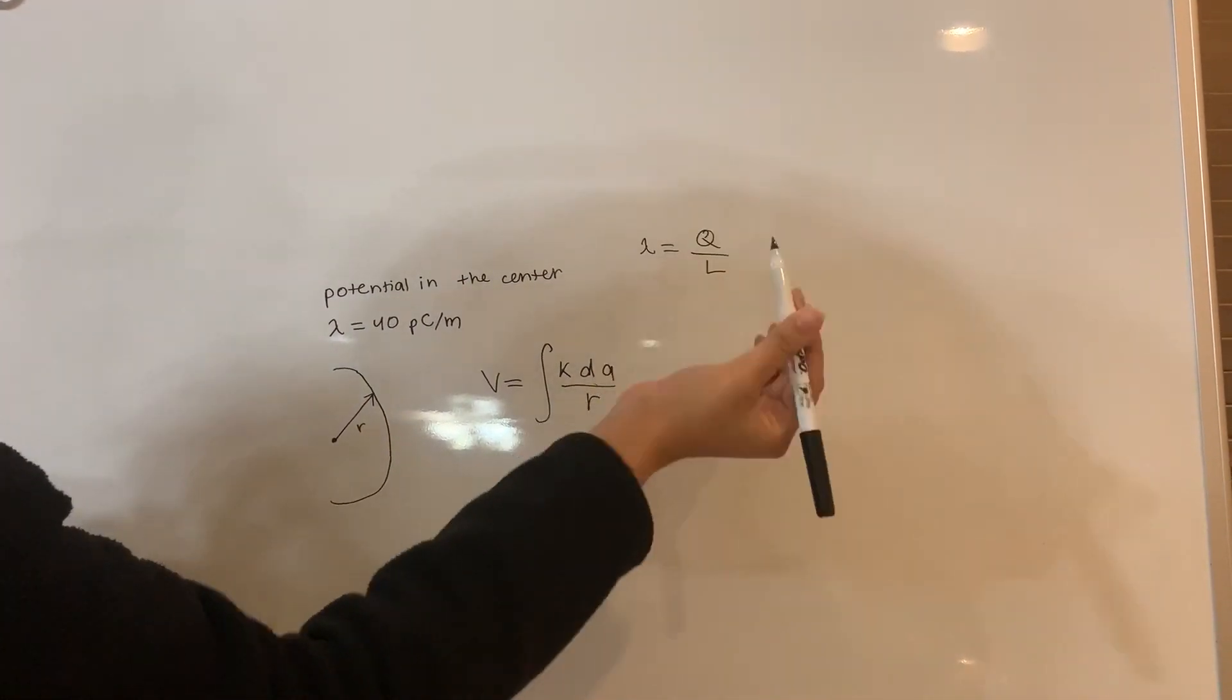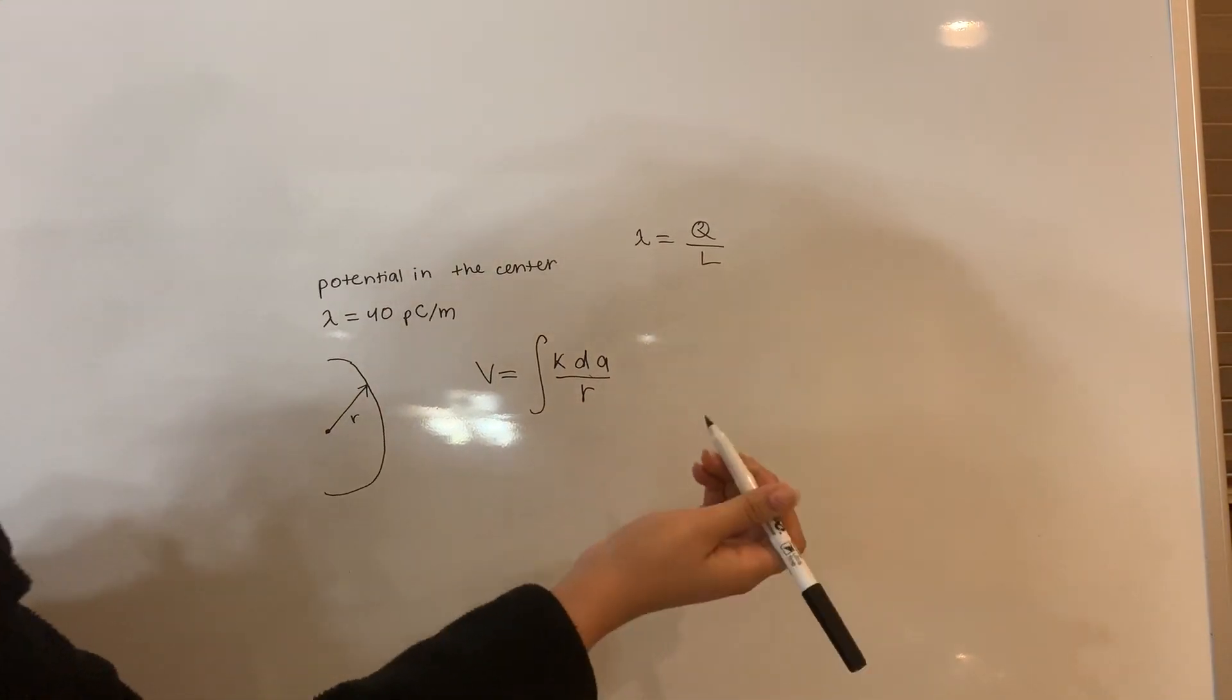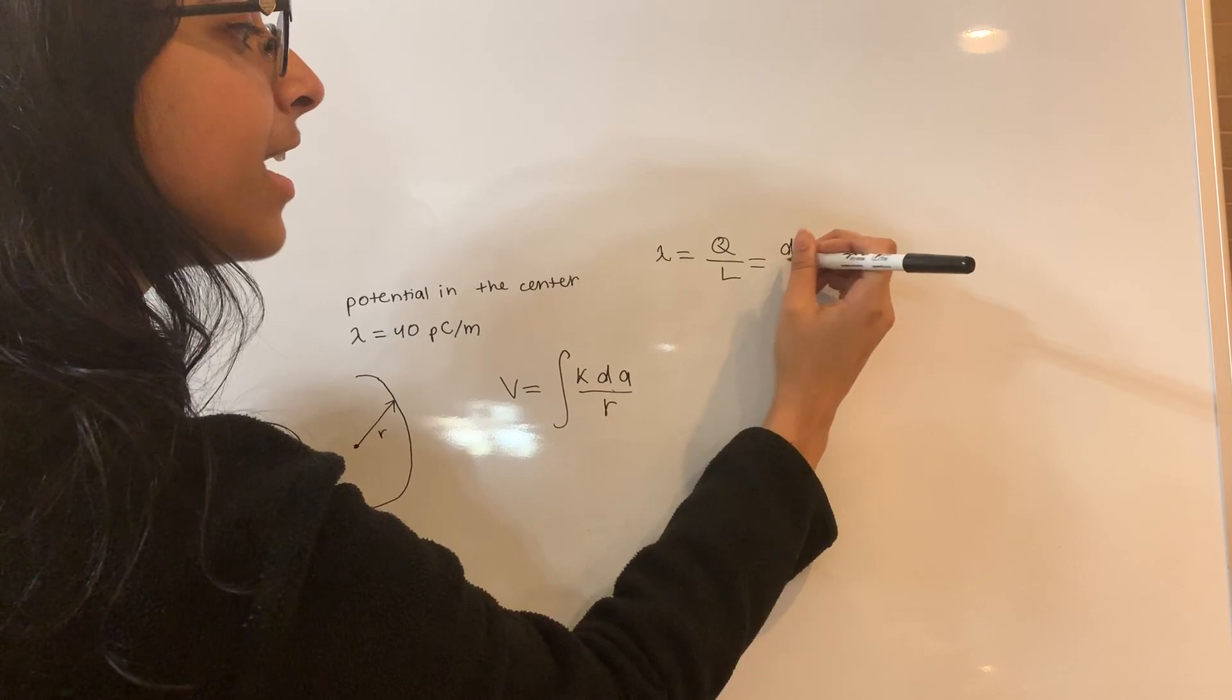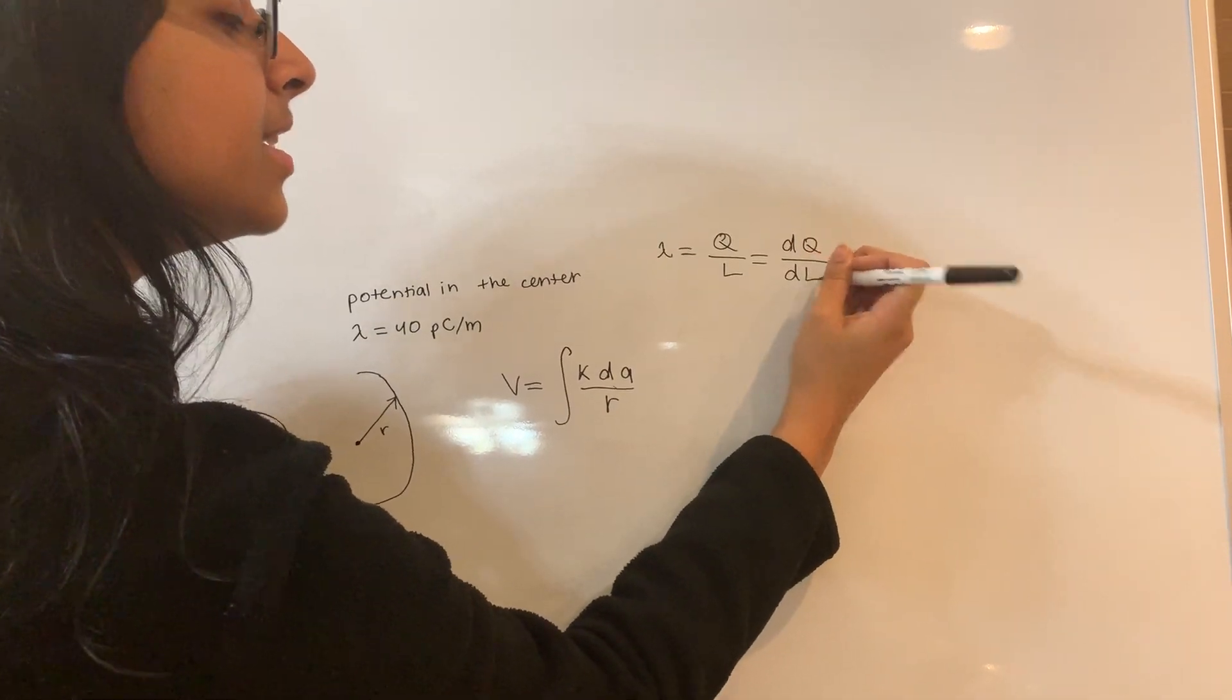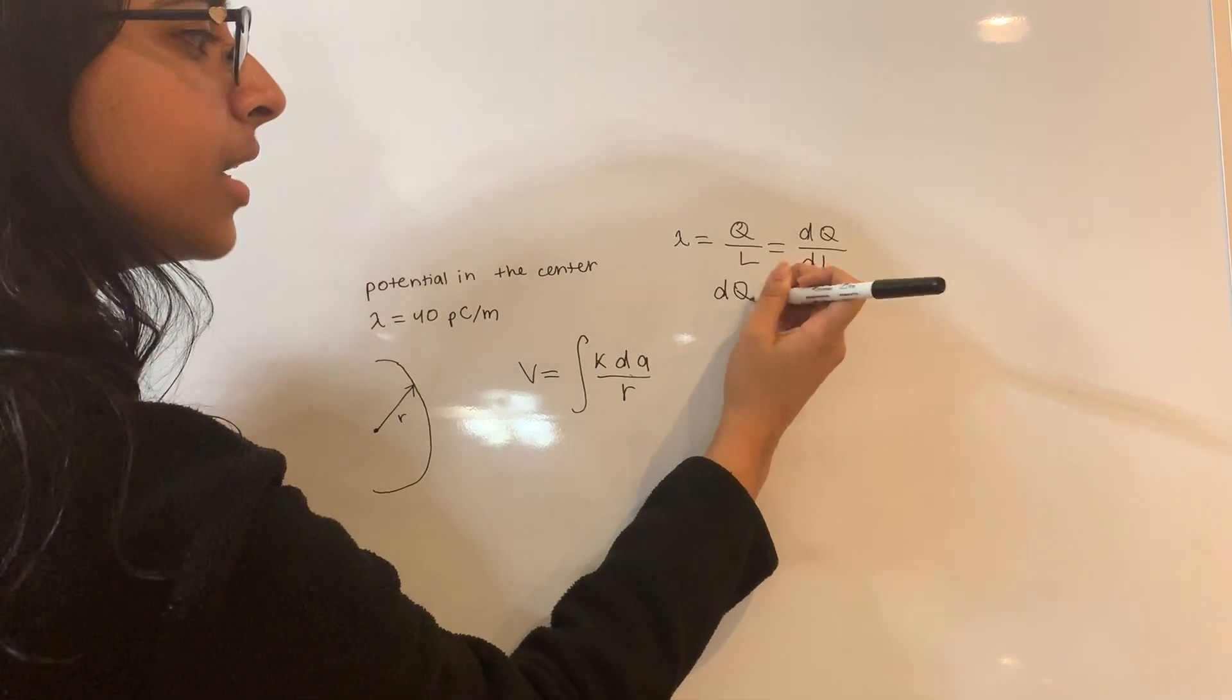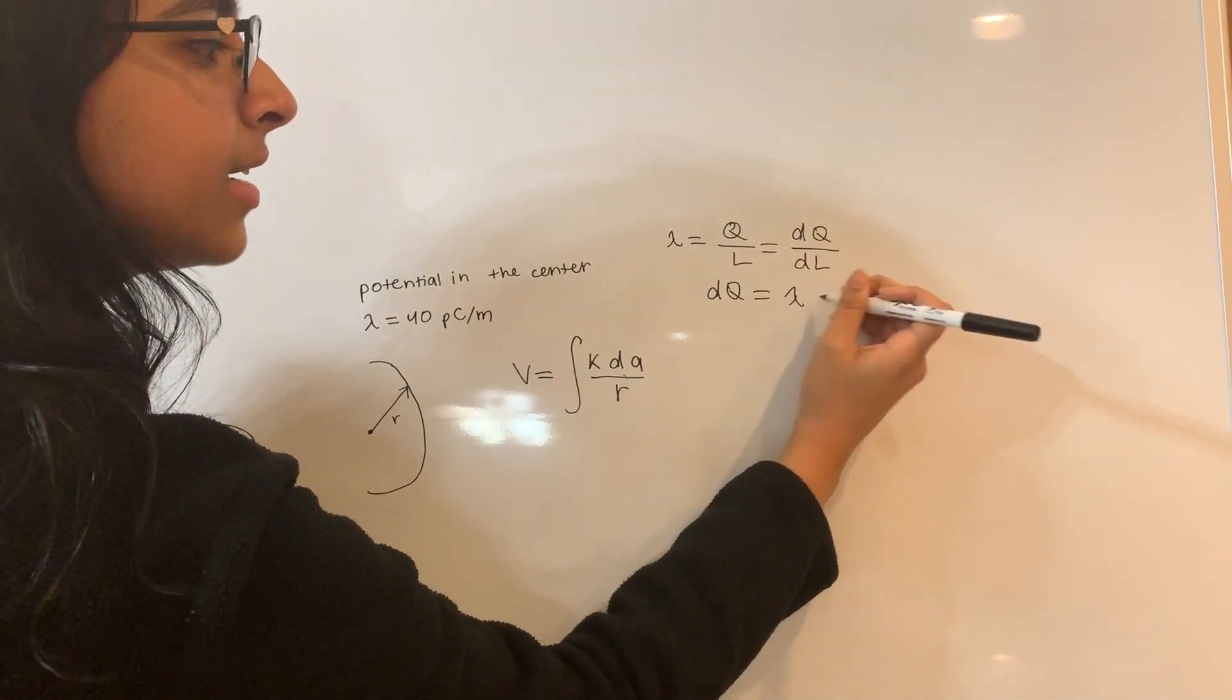And this applies no matter how small your charge and how small your length are. So we can even make this a differential charge and length, so it's going to be dq over dl. That means we can solve for dq and say dq equals lambda dl.